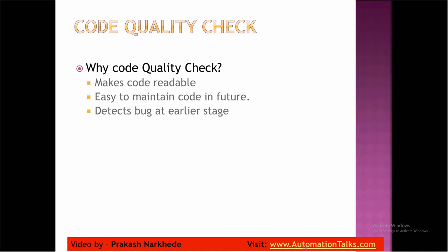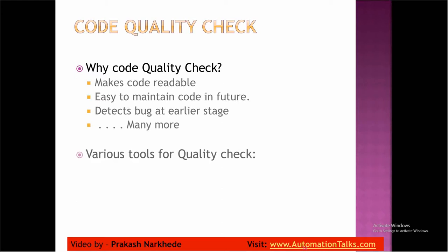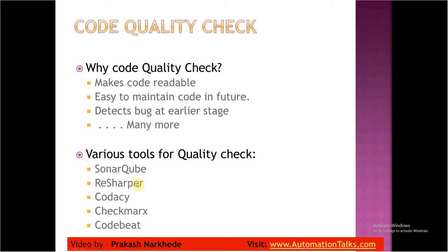Getting defects at an early stage reduces time, fixing time, and even cost — that's the main factor. Doing code review is one part of code quality check, but that's a manual process. The automated process for code quality check is by using tools — there are many tools in the market such as SonarQube, ReSharper, Codacy, and a few others. These tools can be integrated with your continuous integration pipeline.